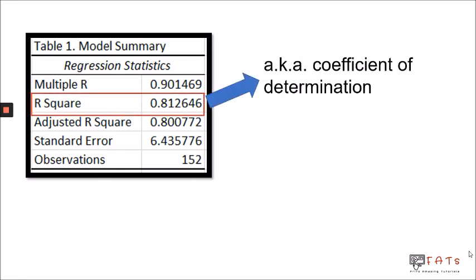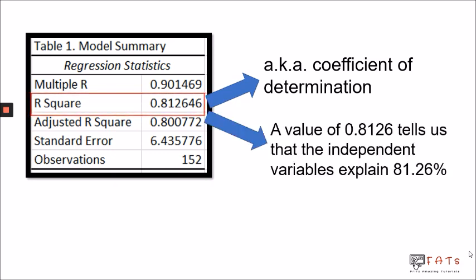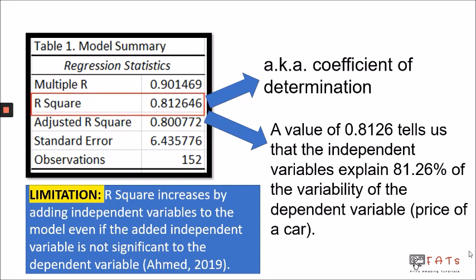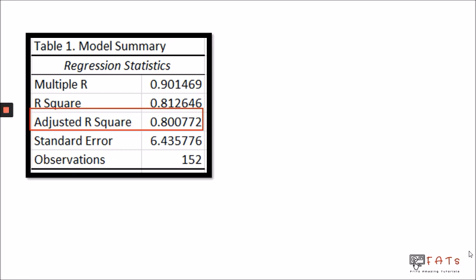Next is R-square, also called the coefficient of determination, which tells us how much percent of the change in the dependent variable is attributed to the independent variables. In this example, a value of 0.8126 tells us that the independent variables explain 81.26% of the variability of the dependent variable. However, R-square has a limitation: its value increases by adding independent variables to the model, even if the added variable is not really significant.